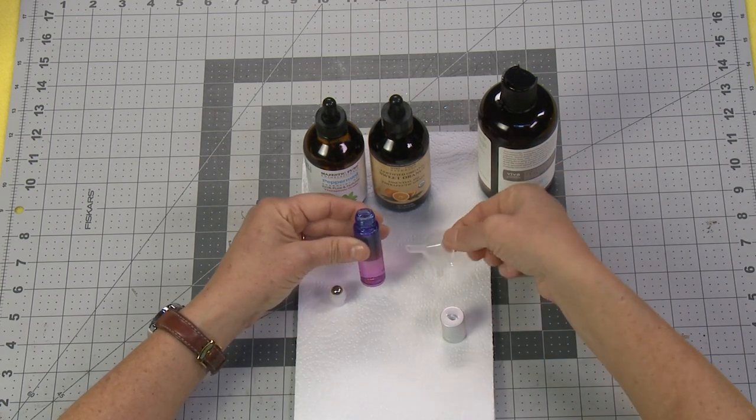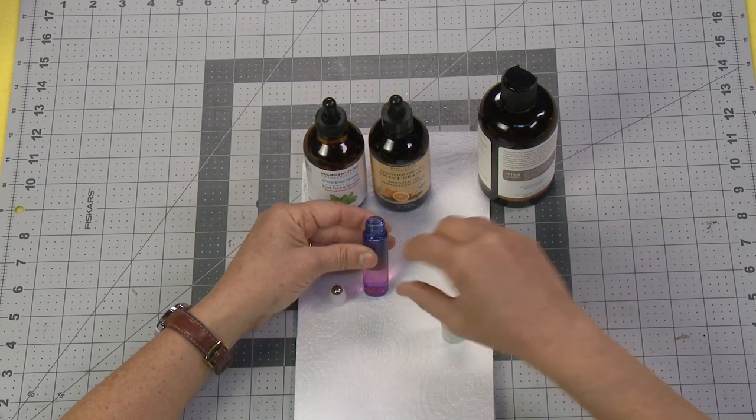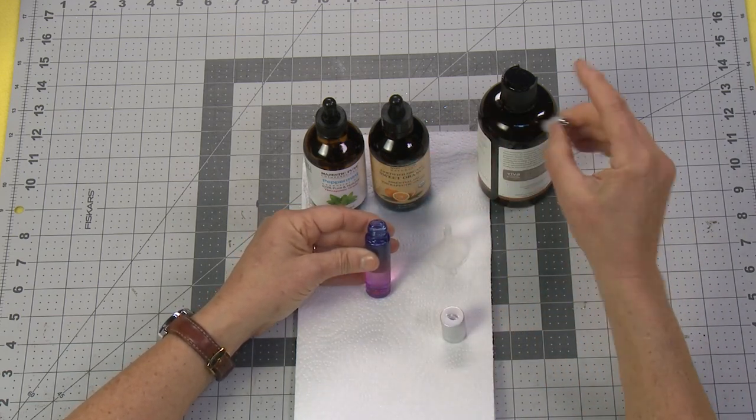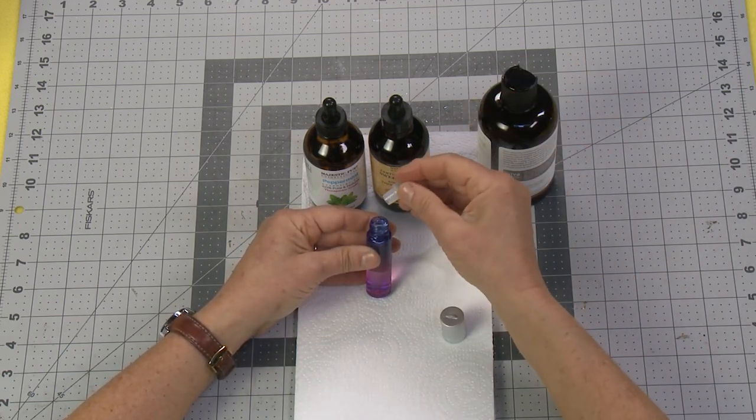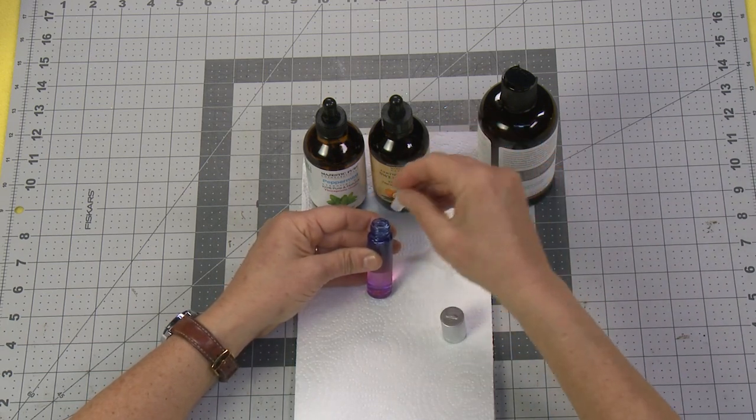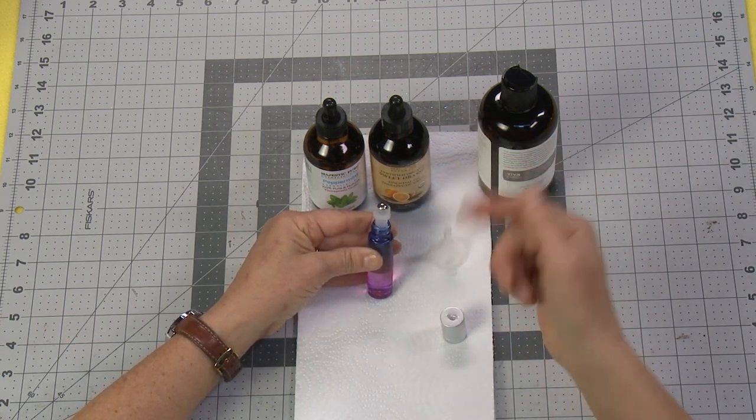So I filled that up to the top there and the reason I have a paper towel is because essential oils and of course the coconut oil are oily and you don't want to get it all over your clothes or the surface.